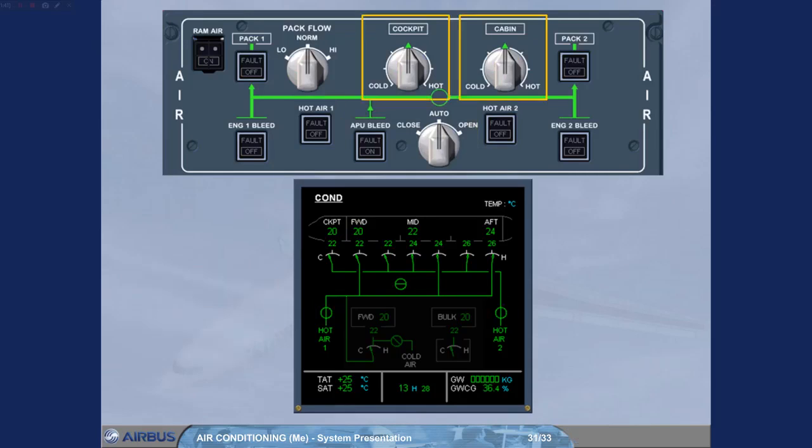The zone temperature selectors are used to adjust the required temperature for the associated zone, cockpit and cabin. Note, each cabin's zone temperature can be optimized through the forward attendant panel.